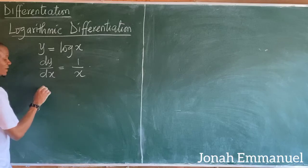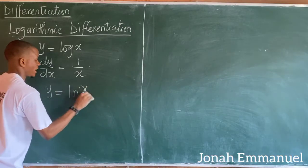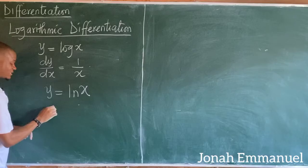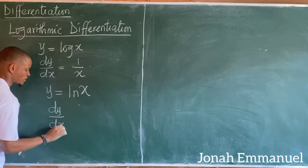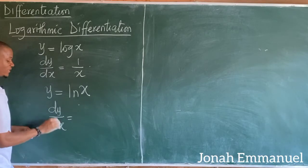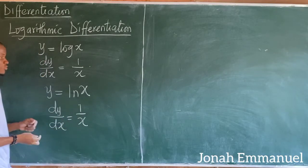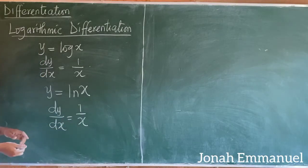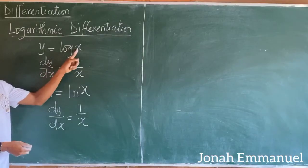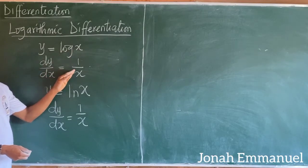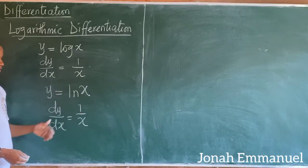Also, if y is equal to ln x, differentiating y with respect to x gives dy over dx equal to 1 over x as well. So observe: if I differentiate log x, I get 1 over x; if I differentiate ln x, I also get 1 over x.